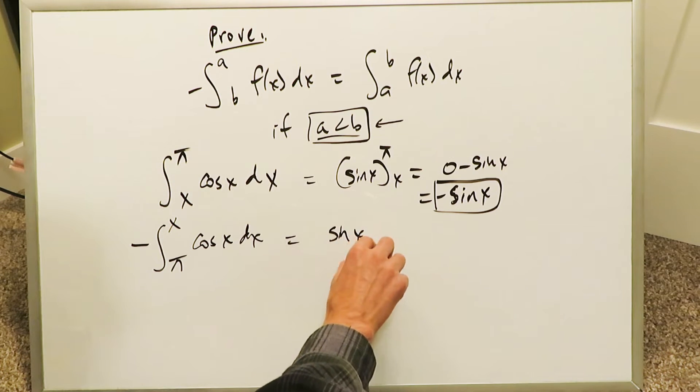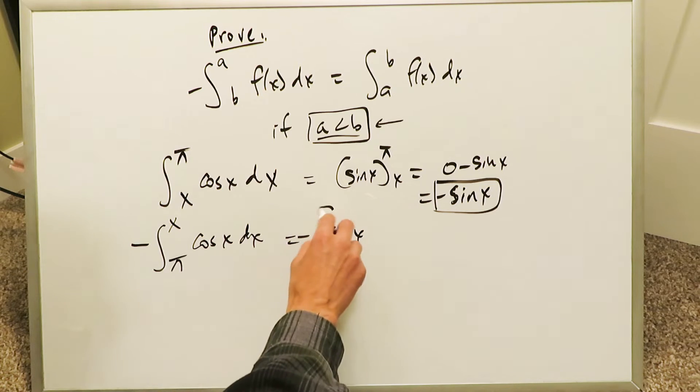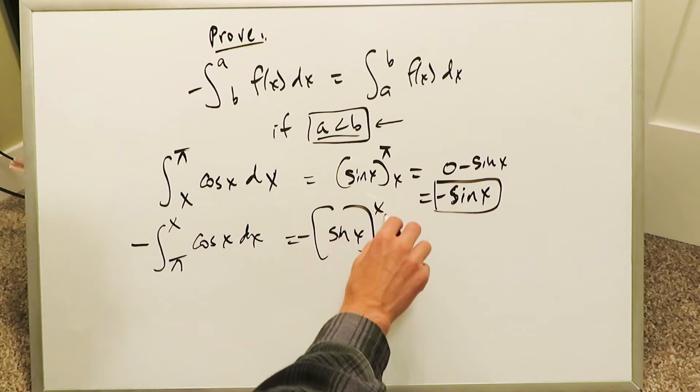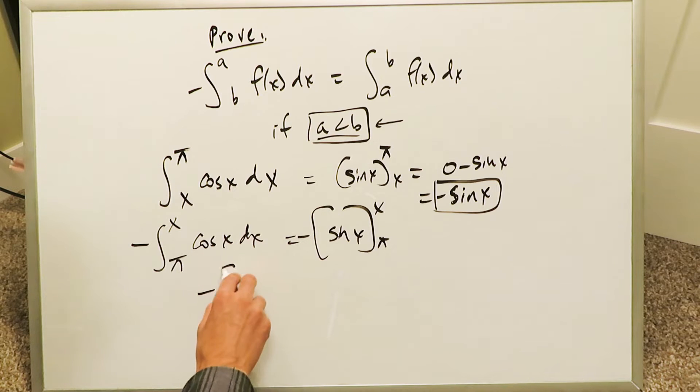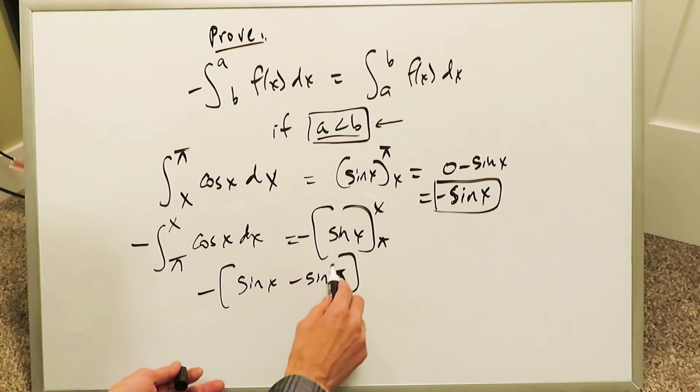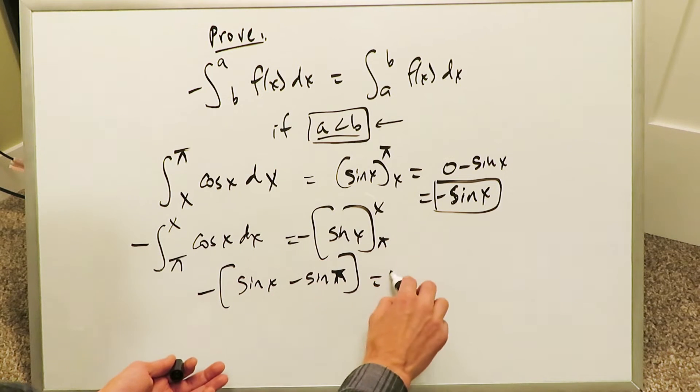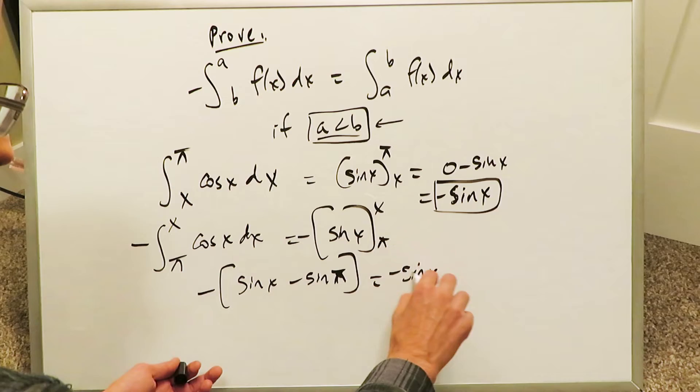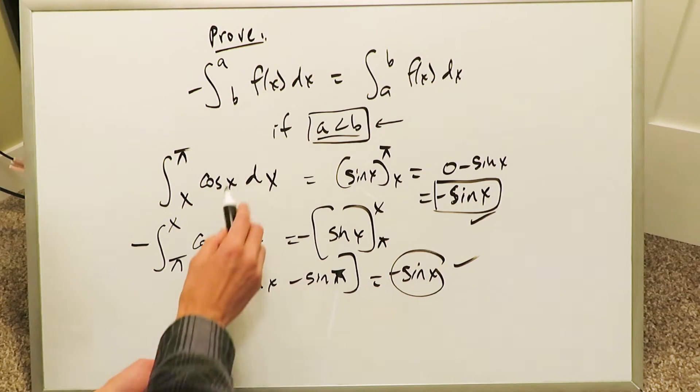We'll have sine x again come out but we know we have a minus sitting outside, so we can keep that outside. We have x and π. When we do the definite integration, we still have this minus outside. We're doing sine x upper limit minus sine π, which is the lower limit. Sine π is zero. You just are basically left with minus sine x, and you've shown that this right here is equal to this right here.